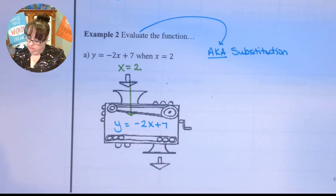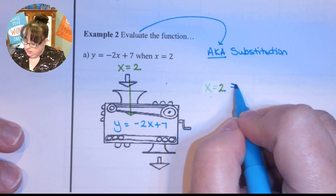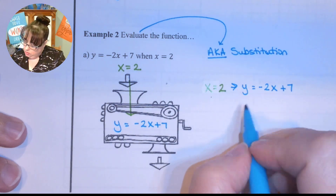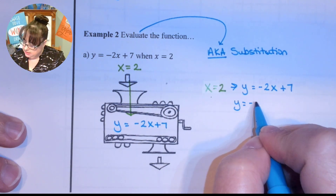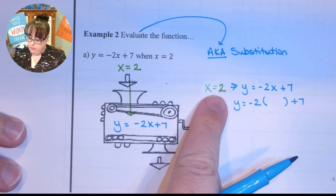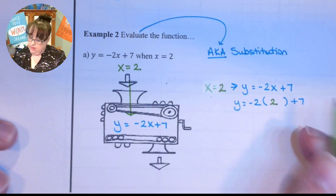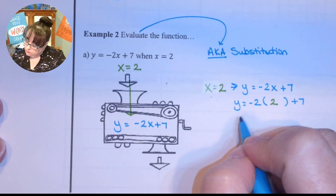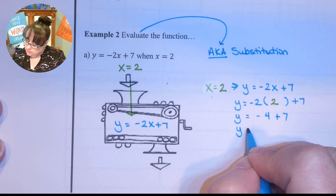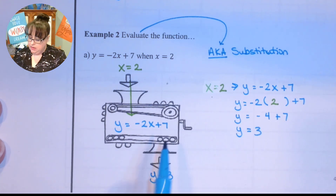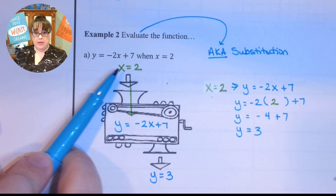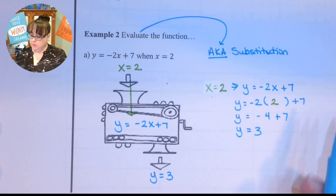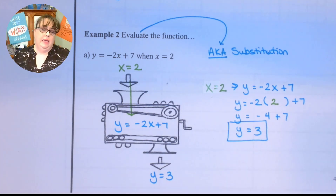So what's going on in the machine is this: y equals negative 2x plus 7. So y equals negative 2 times positive 2, and now I'm just going to evaluate. Negative 2 times 2 is negative 4, and negative 4 plus 7 is 3, so my answer is y equals 3. When I put in x equals 2, it cranks through the machine and gives me y equals 3 as an answer — it's just substitution.